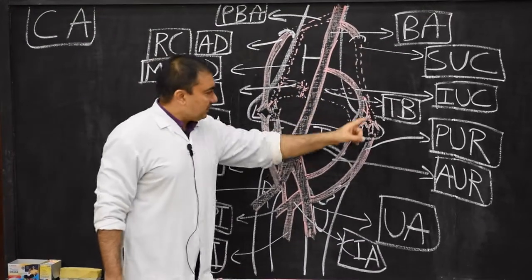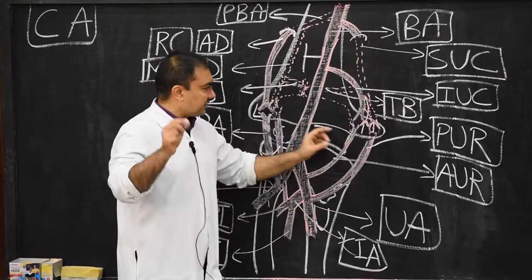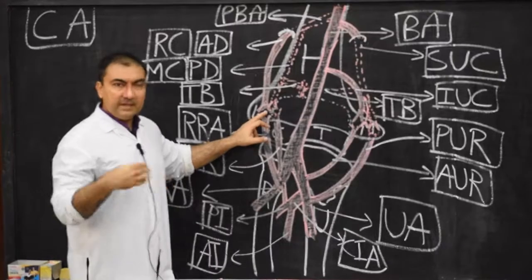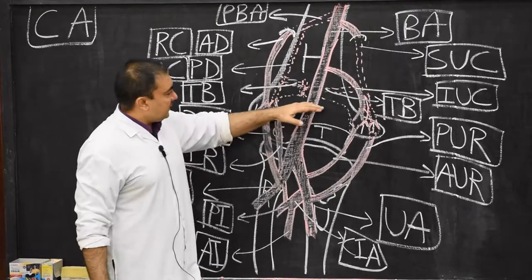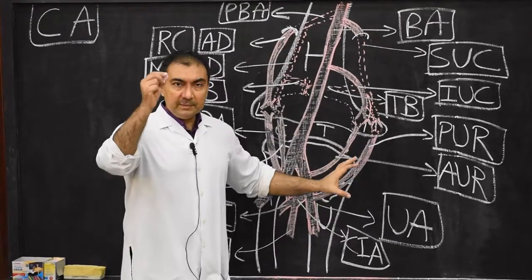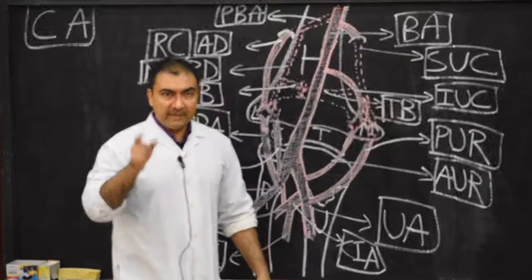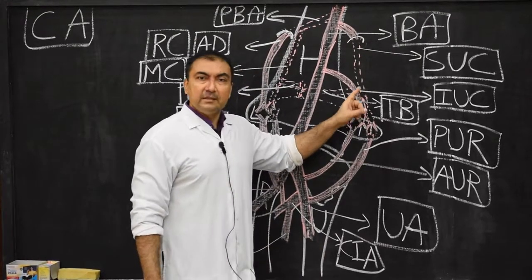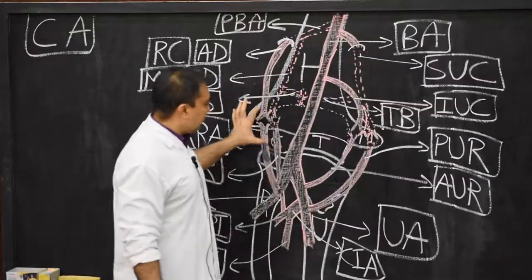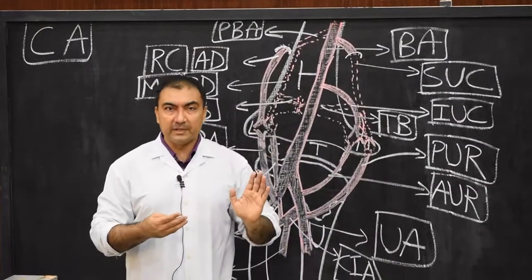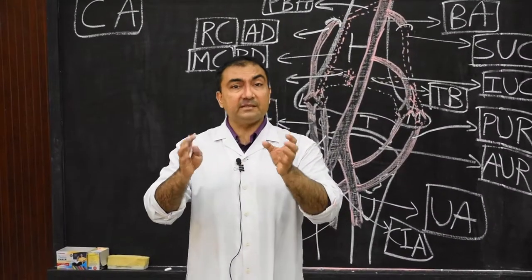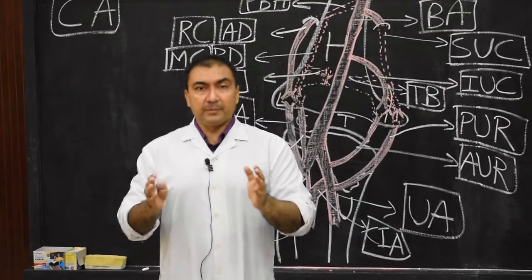Here we have completed the anastomosis around the elbow joint: in front of the medial epicondyle, behind the medial epicondyle, in front of the lateral epicondyle, behind the lateral epicondyle, and above the olecranon fossa. By remembering two arteries — one from above and one from below — for each compartment, you can remember the entire anastomosis of the elbow joint. This short note also has various MCQs which can be asked. Thank you very much.